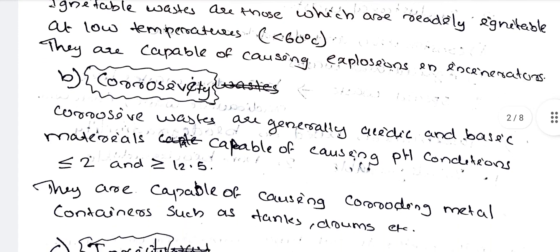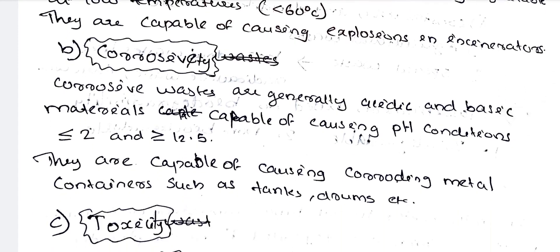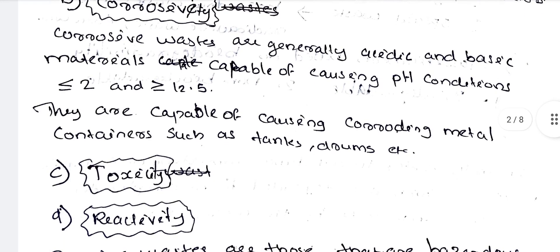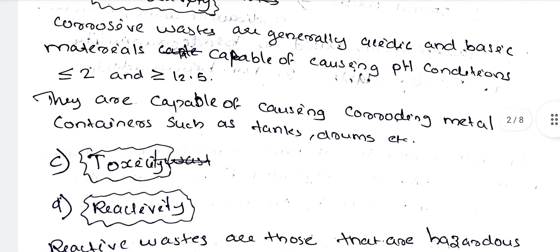Next: corrosivity. Corrosive wastes are generally acidic and basic materials capable of causing pH conditions less than or equal to 2 and greater than or equal to 12.5. They are capable of corroding metal containers such as tanks and drums.